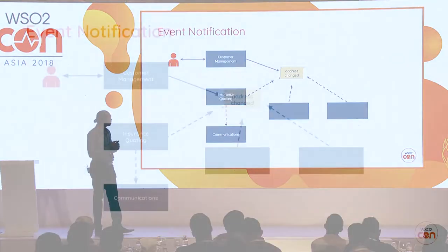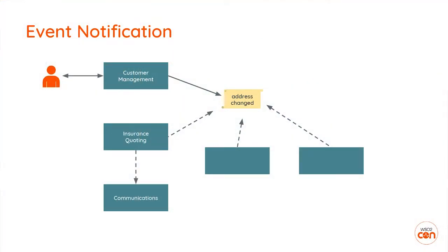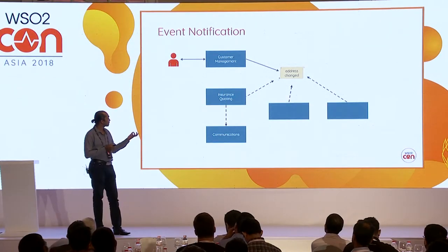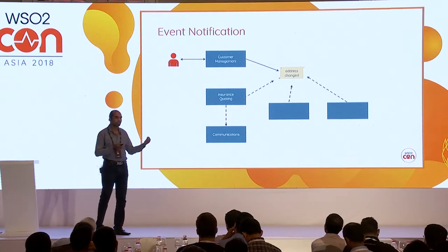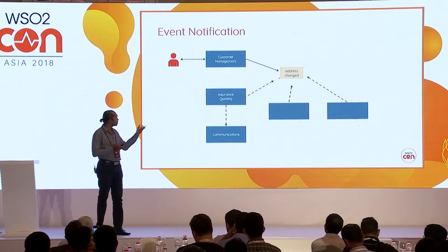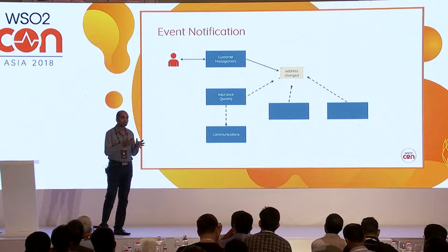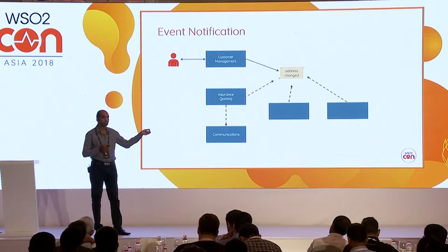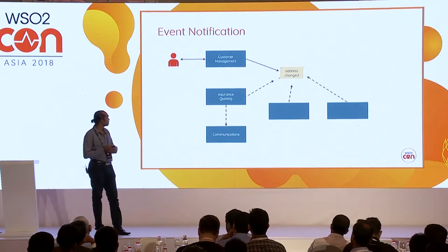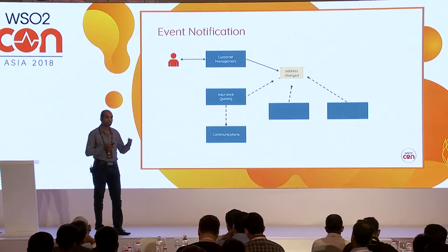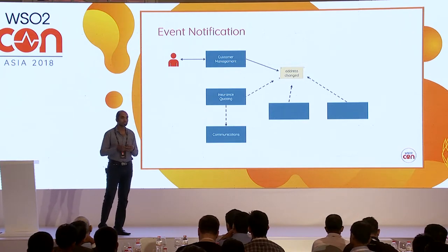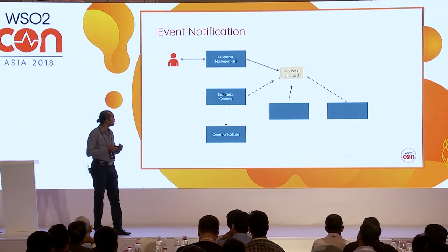Once you have a proper event defined, the real advantage comes when you want to implement another system that needs to act on an address change — you can easily add those systems into your overall architecture. When you bring in a new system, you don't have to make any changes to the customer management system or insurance quoting system. You can simply add an additional system into this architecture. This gives a lot of flexibility and extensibility in an event-driven architecture.